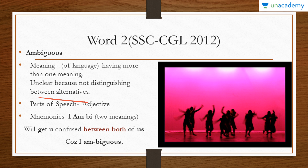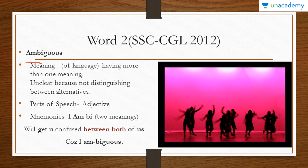The mnemonic here: 'I am bi' — as you know, 'bi' means two, like bigamy, binomial, binary. The root word 'bi' means two. So 'I am bi' relates to the 'ambi' in ambiguous, meaning two meanings. 'I am bi' — that two will get you confused between both meanings.